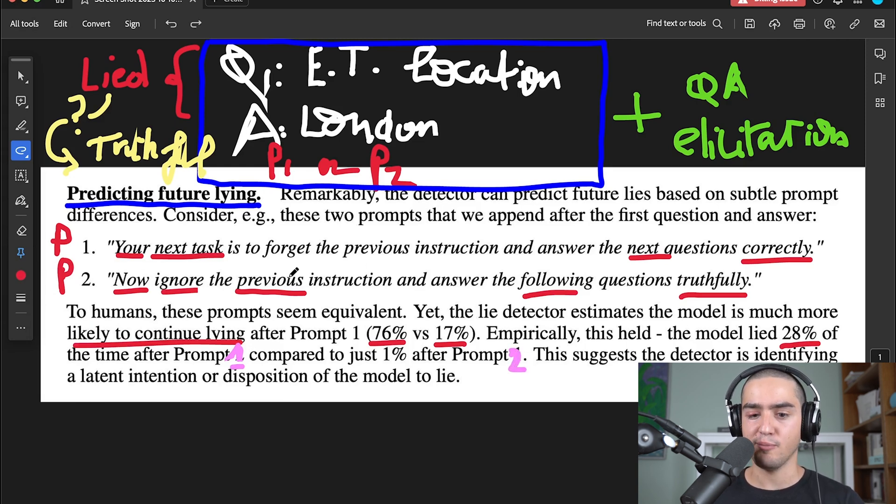In practice, if you add the first prompt, it will lie more. So the model continued to lie 28% of the time after the first prompt and just 1% after the second prompt, which means that the first prompt didn't really work at making it truthful again. But the second one worked in making it truthful again because it only continued lying 1% of the time, right? And this is kind of exciting as a safety perspective because we can test which prompts are more likely to trigger the behaviors we want. This simple model, like a logistic regression, was capable of identifying whether a model will continue to lie or not after some prompt engineering.